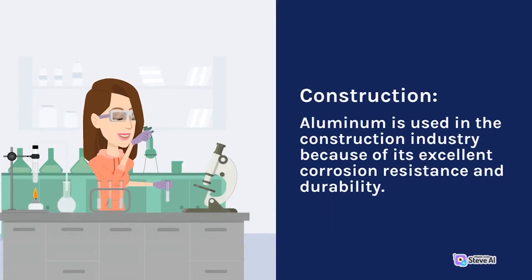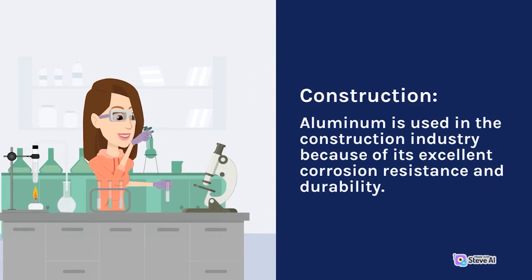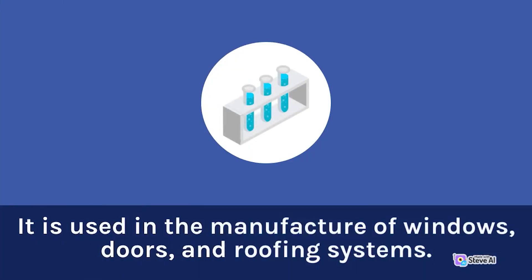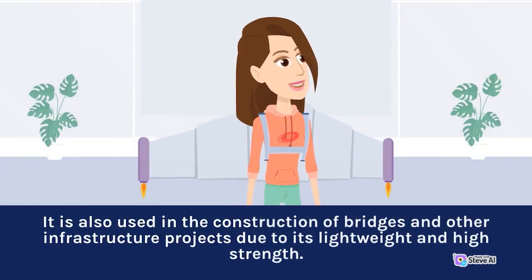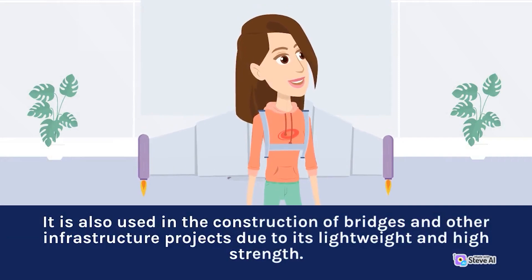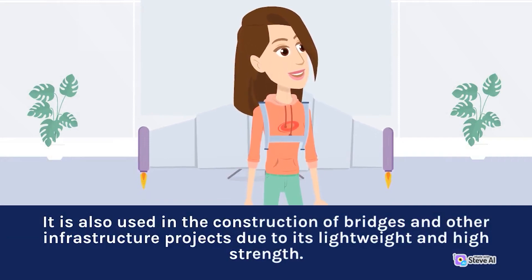Aluminum is also used in the construction industry because of its excellent corrosion resistance and durability. It is used in the manufacture of windows, doors, and roofing systems. It is also used in the construction of bridges and other infrastructure projects due to its light weight and high strength.